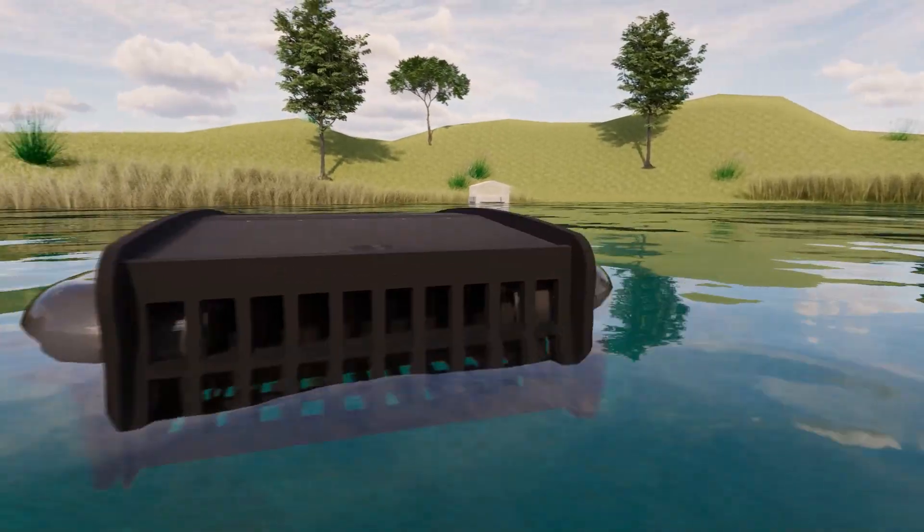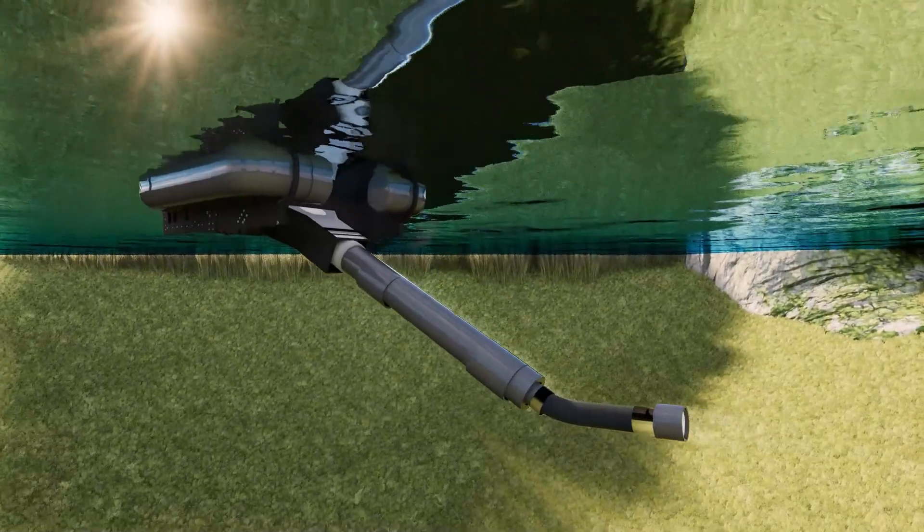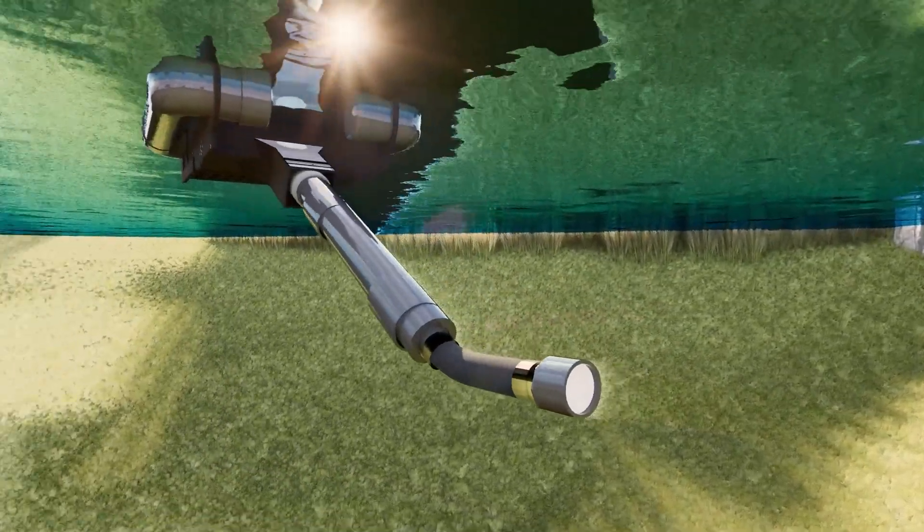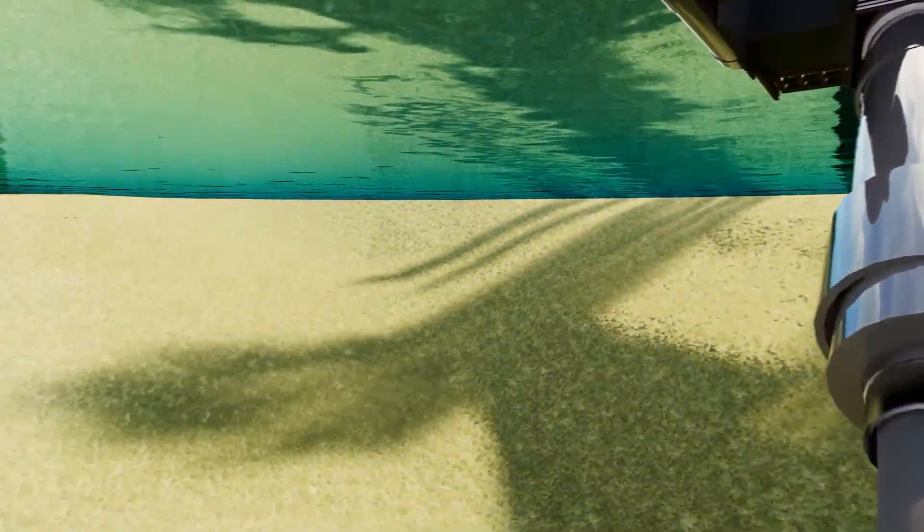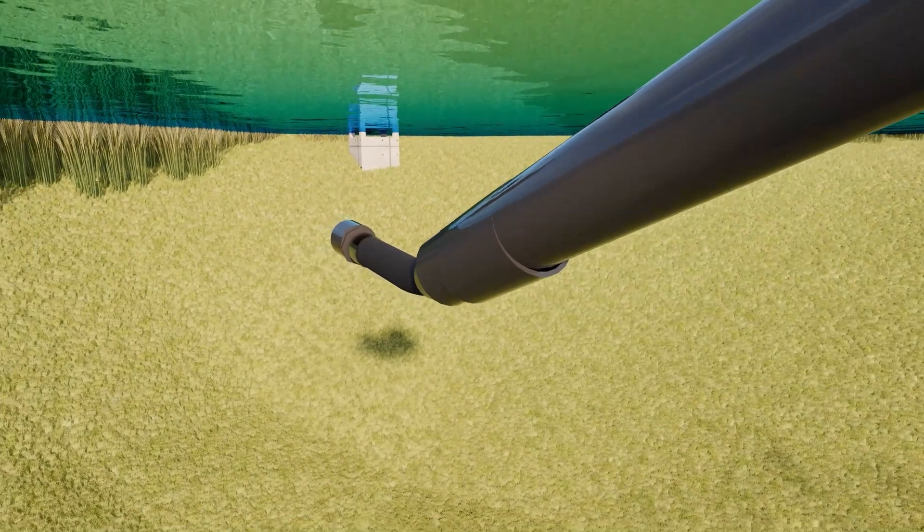Traditional detention systems utilizing weirs and orifices only reach peak allowable flow when the pond reservoir is full, whereas the Faircloth Stormwater Skimmer Floating Surface Drain has an orifice with a fixed head that floats below the water surface.